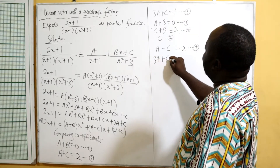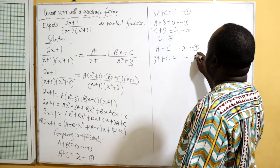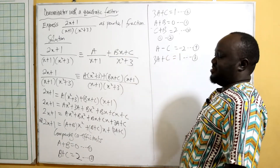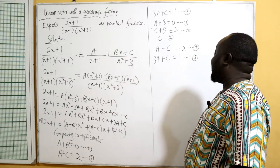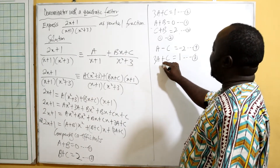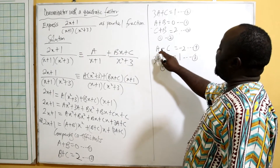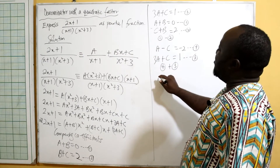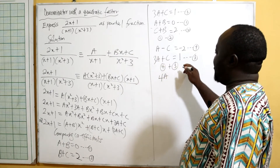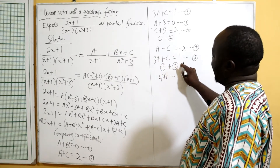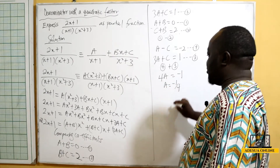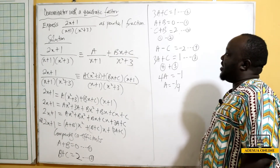Adding equation four and equation three to eliminate c: a plus 3a equals 4a, and negative two plus one equals negative one. So 4a equals negative one, giving a equals negative one over four.